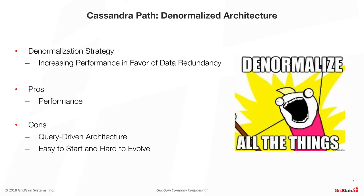Denormalization is a strategy used to increase performance by adding redundant data where it helps the most. We can use extra attributes in an existing table, or add new tables, so that we can satisfy and run as many queries as we want — paying with data redundancy. The overall benefit of this denormalized architecture, which made Cassandra so popular, is performance. You gain performance by sacrificing data redundancy — you store an extra copy of your data to run specific queries optimally in Cassandra.